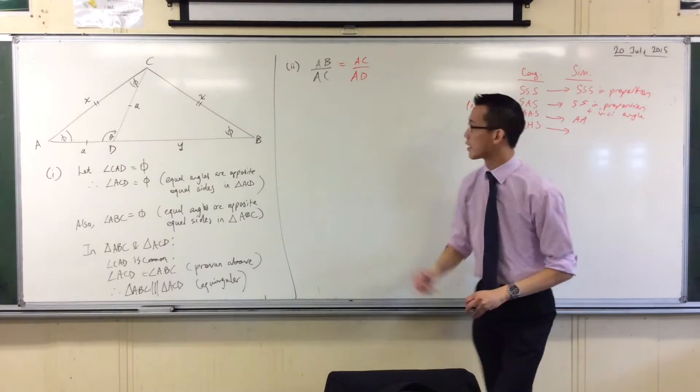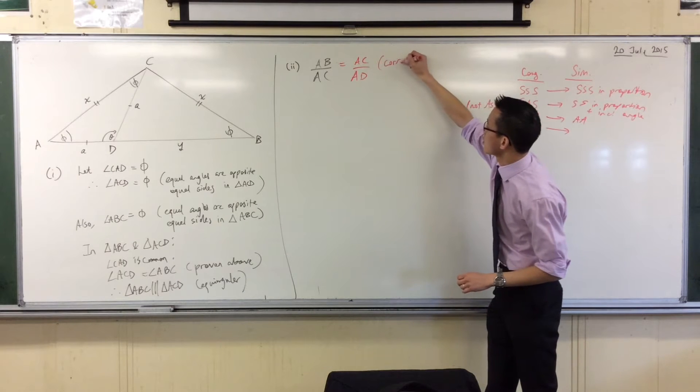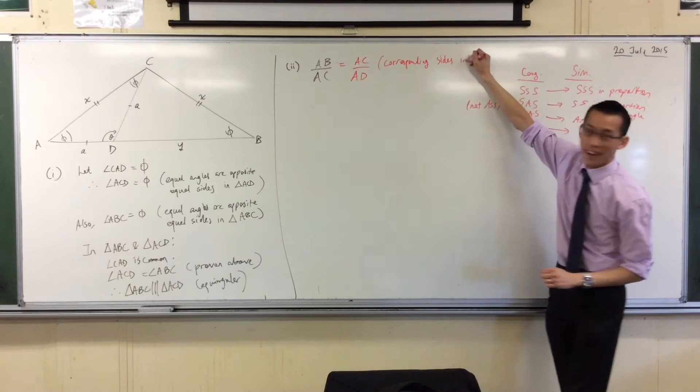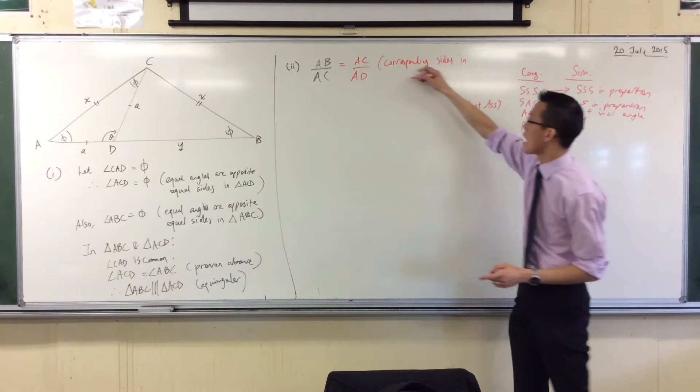I'm going to go AB on AC equals AC on AD. That's the pairing that I have chosen, okay? The way that I would say it is, corresponding sides in similar triangles are in proportion.